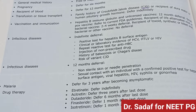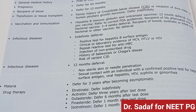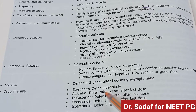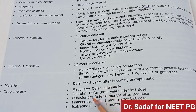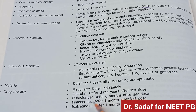Malaria: defer if within the past 3 years they have been in a malaria-endemic area and are asymptomatic. Drug therapy deferrals: Etretinate — defer indefinitely; Acitretin — defer 3 years after last dose; Finasteride — defer 1 month; Isotretinoin — defer 1 month.